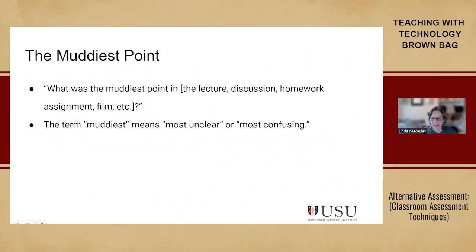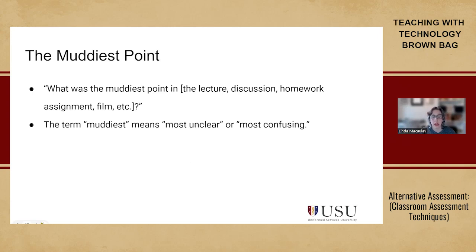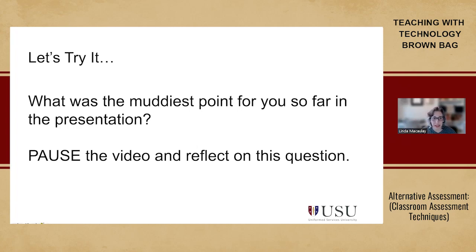Now we're going to try another classroom assessment technique. Having reviewed the background of what CATs are, we want to introduce another example: the muddiest point. This is often considered the simplest CAT to use to help assess where students are having difficulties. It consists of asking students to jot down a quick response to one question: what was the muddiest point in the lecture, discussion, homework assignment, film, or whatever you're doing? The term 'muddiest' means the most unclear or most confusing. Take a moment and think about what is the muddiest point for you after what we've talked about so far.